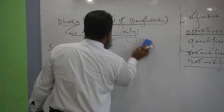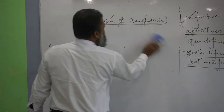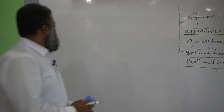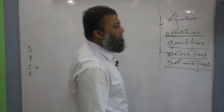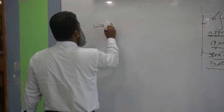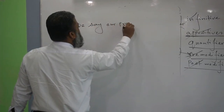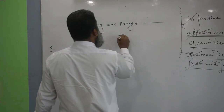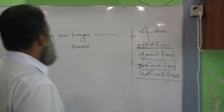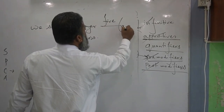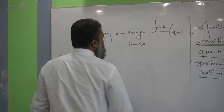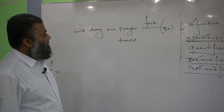What is adjunct? Adjunct means addition — additional words. Then, what is quantifier? Quantifier means quantity — it explains quantity. For example: 'We say our prayer ___ times.' How many times do we say our prayer? Five. This is called a quantifier. If we understand the meaning of the sentence, we will be able to use quantifiers easily.